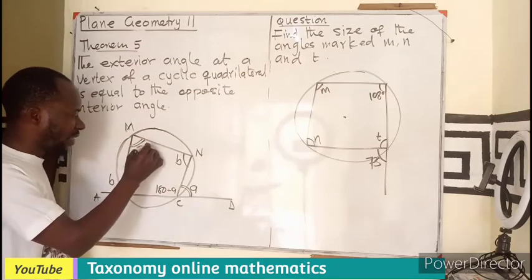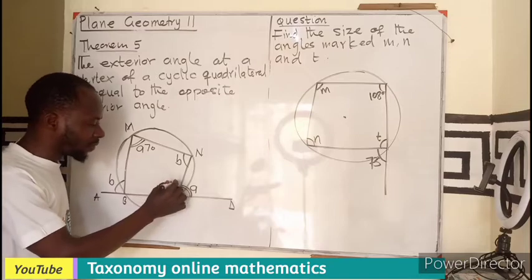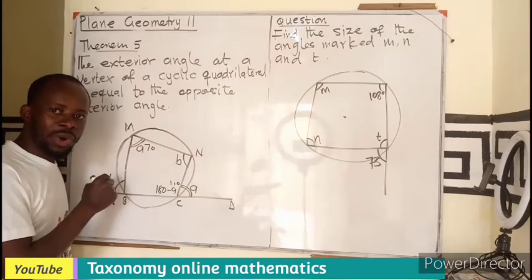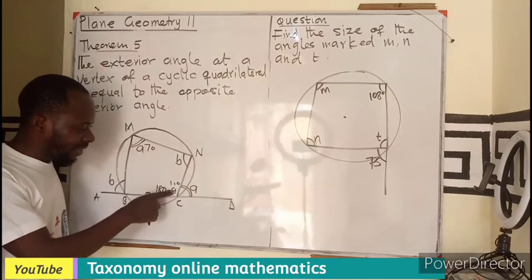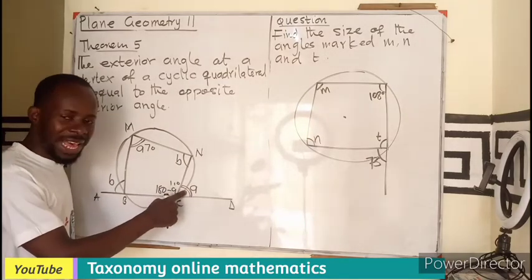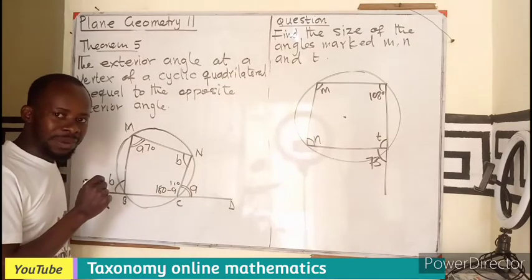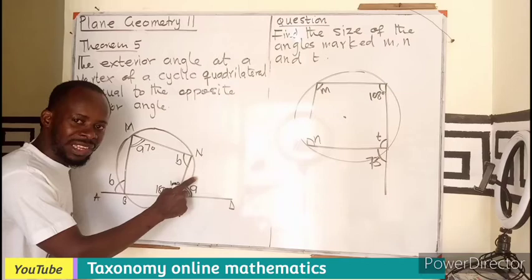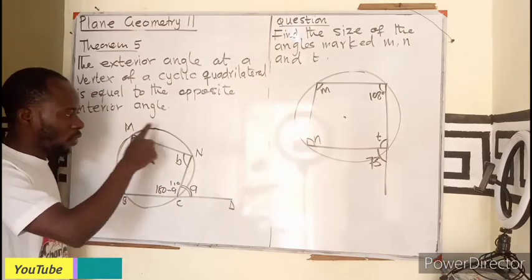So imagine if this were to be 70, then this is going to be 110. Because this plus this will give me 180, or 180 minus A, which is 70, will give me 110. Then 110 plus the exterior angle here will then also add up to 180. Therefore, definitely I need 70 to add to this in order to get 180. So that is it.